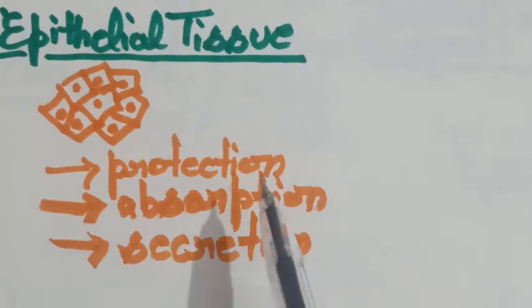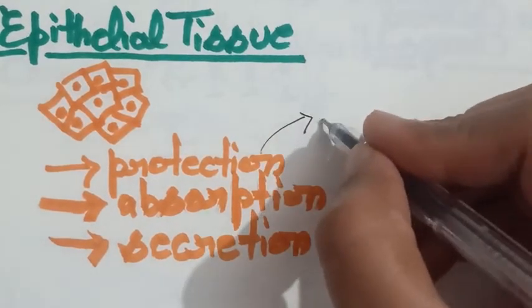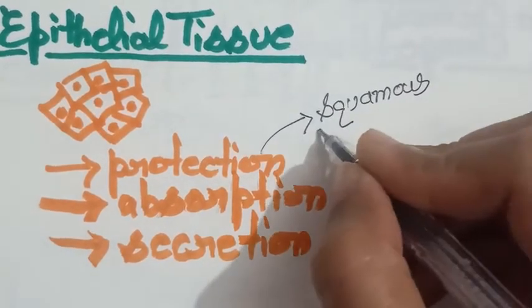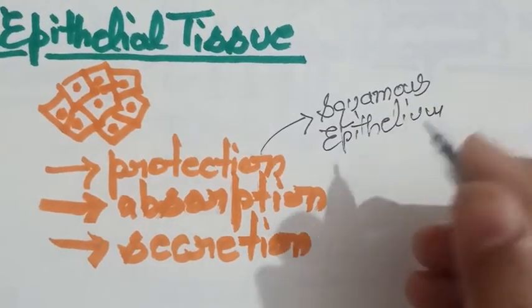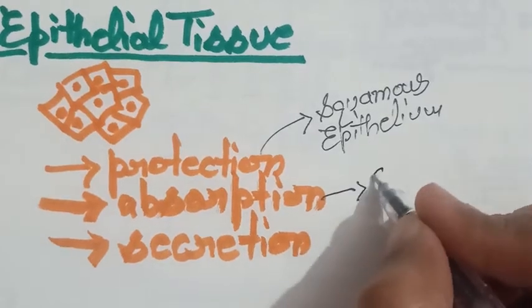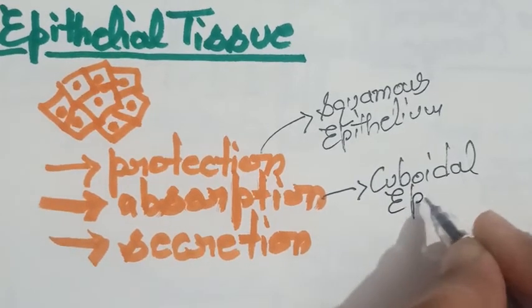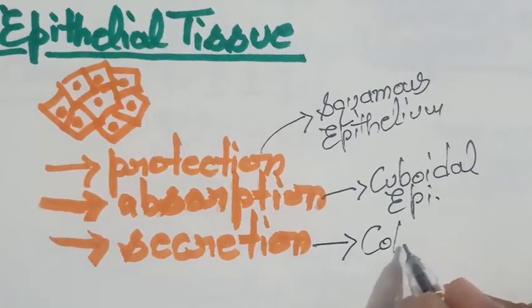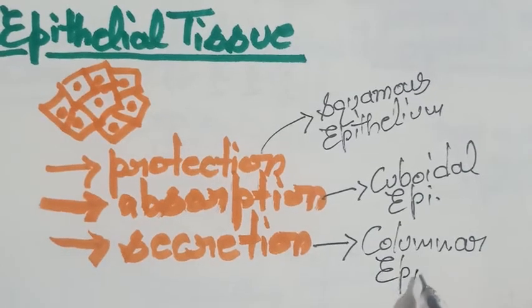So student, on the basis of these three functions, epithelial tissues are further divided into three types. First one, squamous epithelium. Then next one, cuboidal epithelium. Then last one, columnar epithelium.